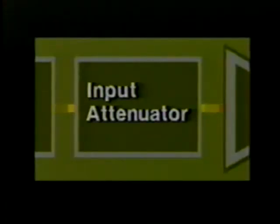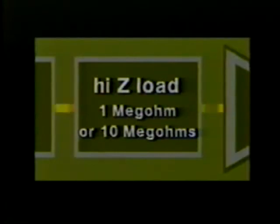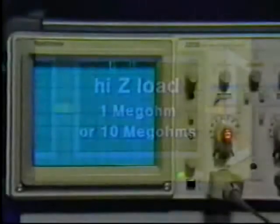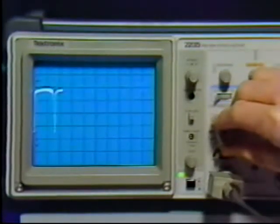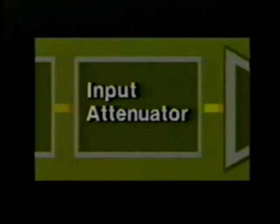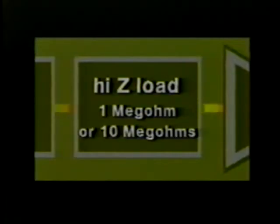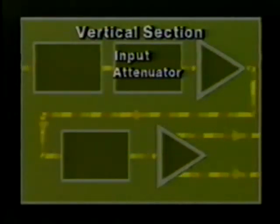The attenuator provides a constant high impedance load to the probe circuit, typically one megaohm or 10 megaohms with a times-10 probe. A constant load assures that any circuits after this point will not affect the source of the applied signal. The attenuator block also provides a means for reducing the signal to a desired level, creating a usable display on the CRT. In short, the attenuator block does two things: it provides a constant load for the applied signal, and it allows signal reduction.